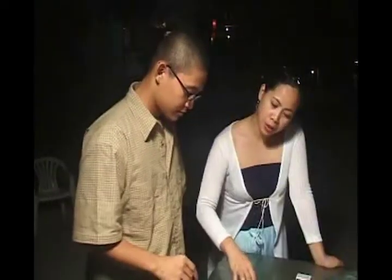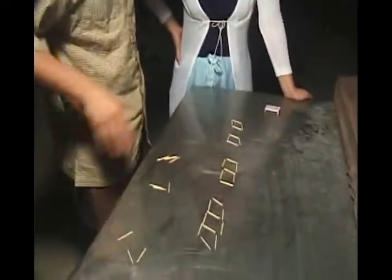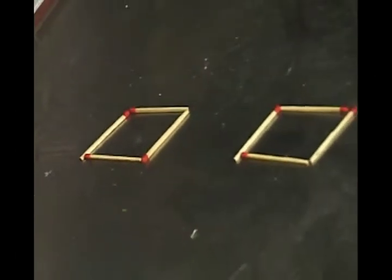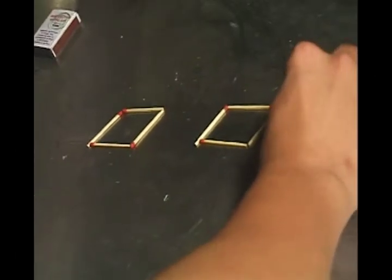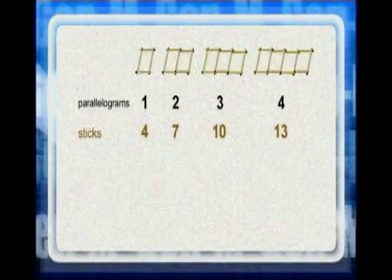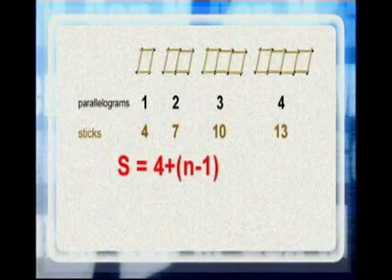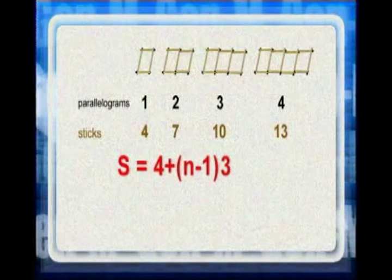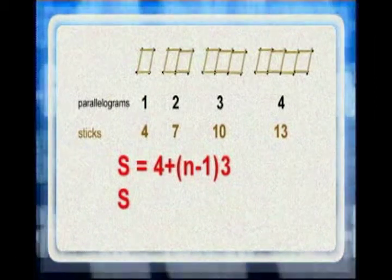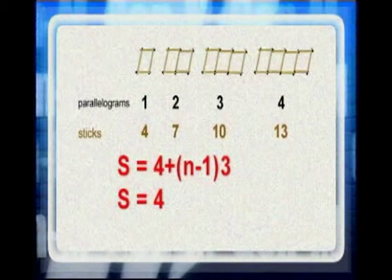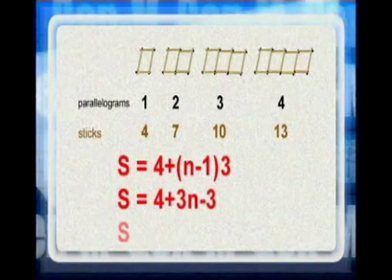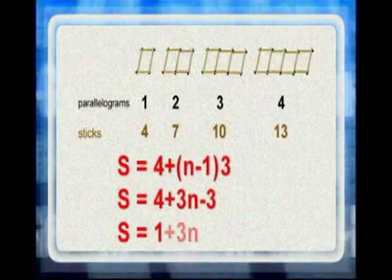Here Tim, why don't you try this one? Okay. After the four sticks, we need to add three more sticks. So, one, two, and three. We can say that the number of sticks S is equal to four plus N minus one multiplied by three. And to simplify, S is equal to four plus three N minus three, or one plus three N.